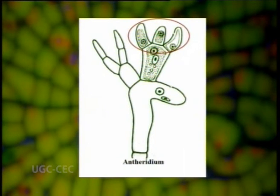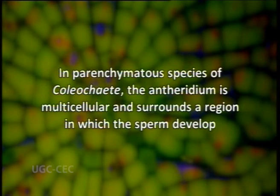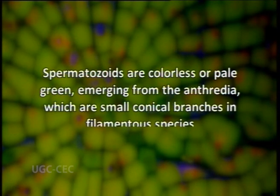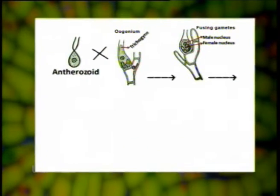The antheridia or spermatangia develop at the terminal ends of lateral branches, usually in groups. In discoid species the antheridia develop midway between the periphery and center of the thallus. A single biflagellate antherozoid develops in each antheridium. In parenchymatous species of Coleochaete, the antheridium is multicellular and forms a region in which the sperms develop. This is in contrast to the antheridium of most other green algae, in which a single cell divides into sperm within its original cell wall. Spermatozoids are colorless or pale green, emerging from small conical antheridia in filamentous species.